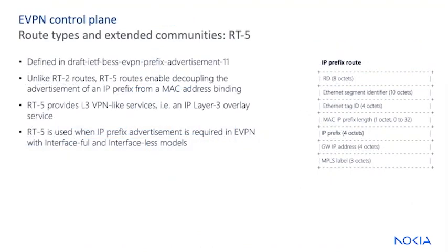The type 5 route, or IP prefix route, is defined in draft IETF BESS EVPN prefix advertisement, version 11. It provides for encoding of inter-subnet forwarding. In the control plane, EVPN type 5 routes are used to advertise IP prefixes for inter-subnet connectivity across data centers. To reach a tenant using connectivity provided by the EVPN type 5 IP prefix route, data packets are sent as Layer 2 Ethernet frames encapsulated in the VXLAN header of the IP network across the data centers. Unlike RT2 routes, RT5 routes provide the ability to decouple the advertisement of an IP prefix from the MAC address binding. This is very important. This allows RT5 to provide a Layer 3 VPN-like service — an IP Layer 3 overlay service using a single address family.